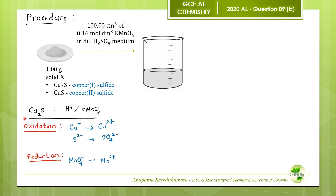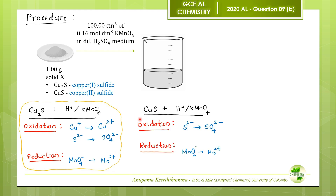In the reaction between copper(I) sulfide and potassium permanganate, both Cu⁺ ions and sulfide ions undergo oxidation while permanganate ions undergo reduction. Cu⁺ ions oxidize to Cu²⁺ ions, sulfide ions oxidize to sulfate ions, and permanganate ions reduce to Mn²⁺ ions. The resulting solution contains Mn²⁺, Cu²⁺, and sulfate ions.